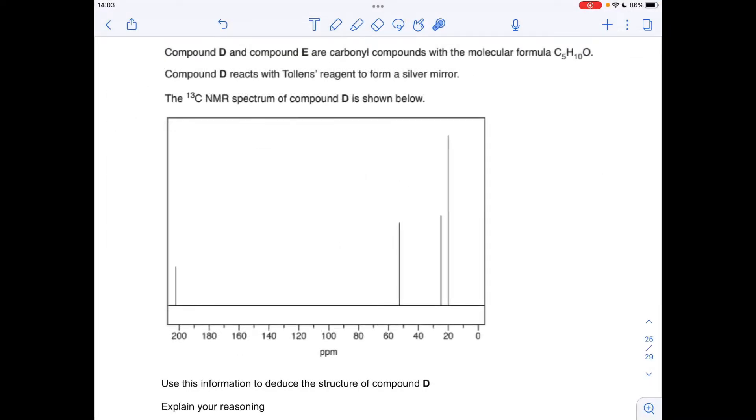OK, so the question's focusing on compound D. We know it's a carbonyl and we're told that it reacts with Tollens' reagent to form a silver mirror. So that means D is an aldehyde. So in terms of functional group, it's going to have this C double bond O with the H also attached to the carbon.